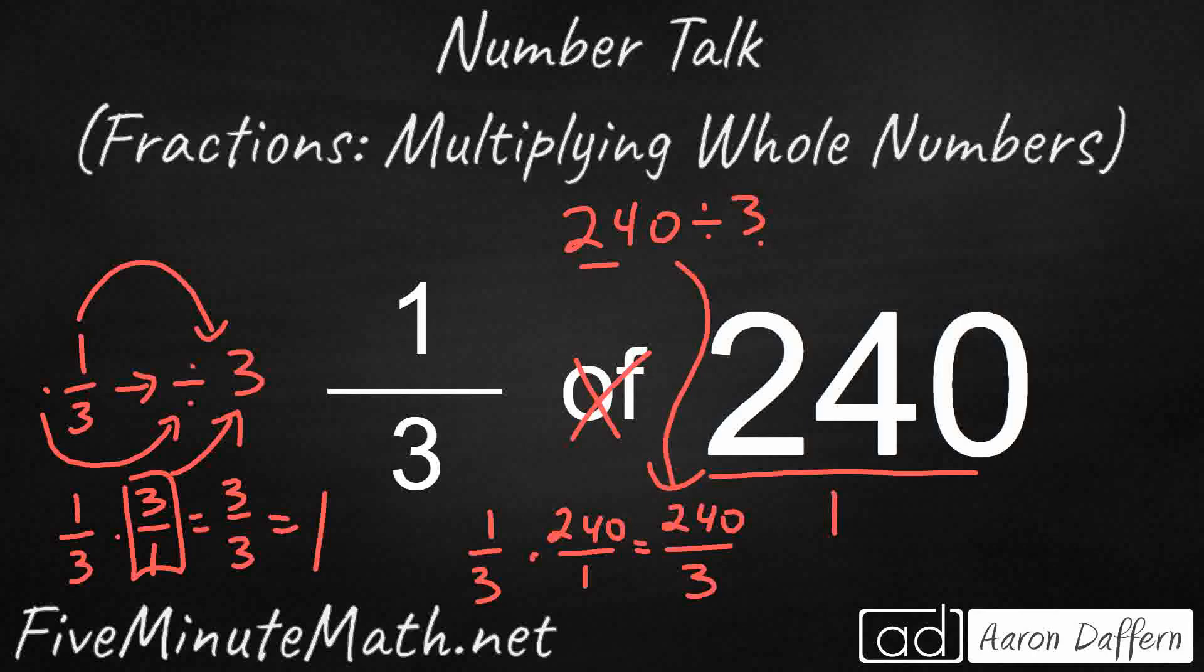So 3 goes into 24 eight times, and then goes into 0 zero times. So our answer is 80.